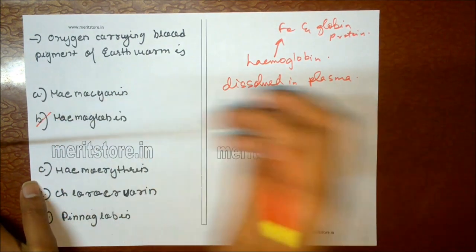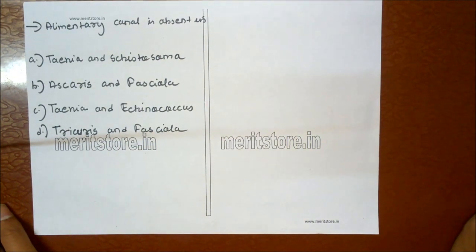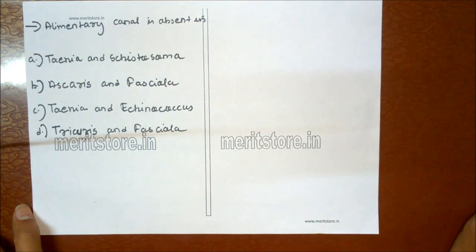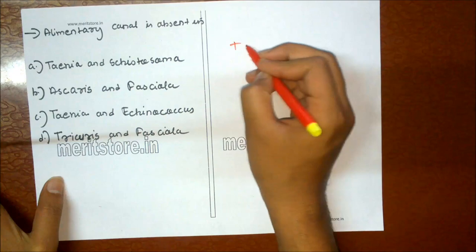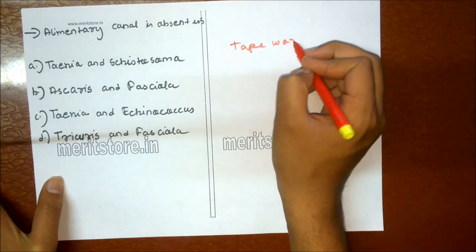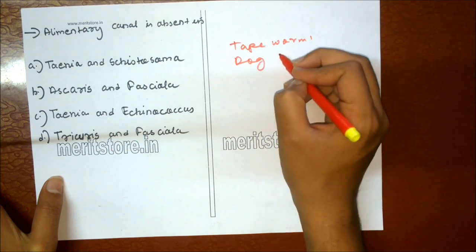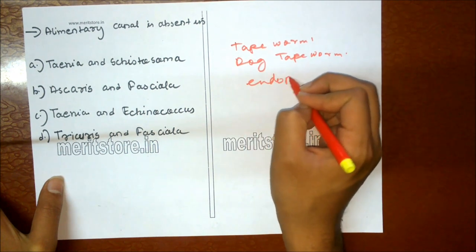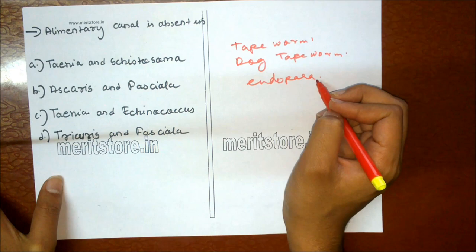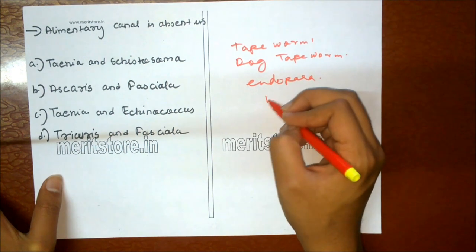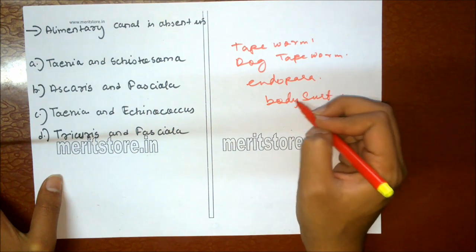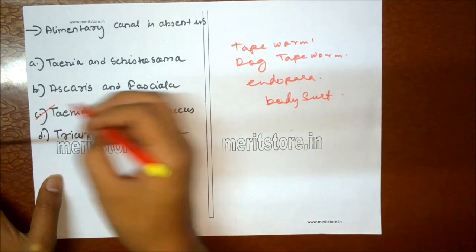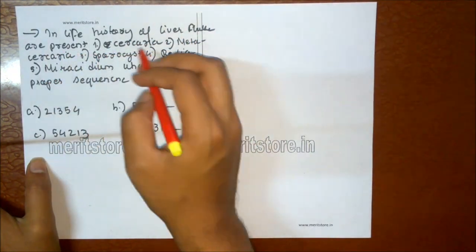Elementary canal is absent in: A Taenia and Schistosoma, B Ascaris and Fasciola, C Taenia and Echinococcus, D Trichuris and Fasciola. Taenia solium — the tapeworm — and Echinococcus — the dog tapeworm — are endoparasites that obtain food from the host through the body surface, so they lack an elementary canal. Option C is the correct answer.